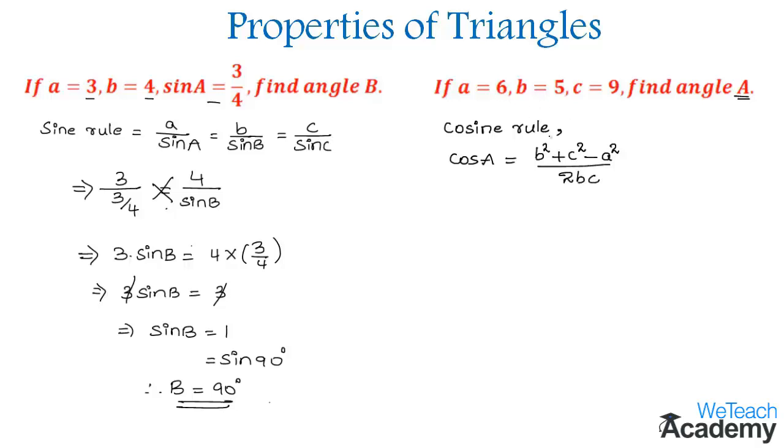Substituting the values of A, B, and C in this formula, we get cos A = (5² + 9² - 6²) / (2 × 5 × 9), which equals (25 + 81 - 36) / (2 × 5 × 9).